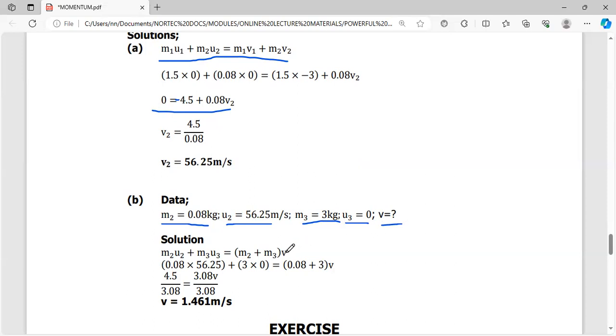We go back to the expression for inelastic collision: M2U2 plus M3U3 equals (M2 plus M3)V. The principle remains the same. So 0.08 times 56.25 plus 3 times 0 equals (0.08 plus 3)V. Simplifying: 0.08 times 56.25 gives 4.5, divided by 3.08. The combination of the two will finally run at a velocity of 1.461 m/s in the direction of the bullet.